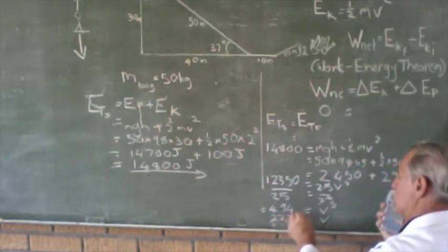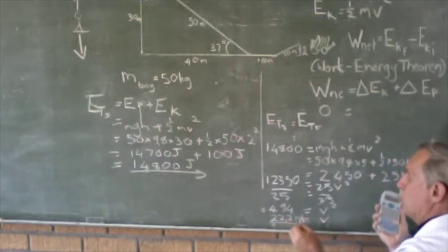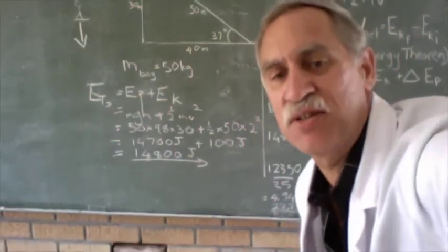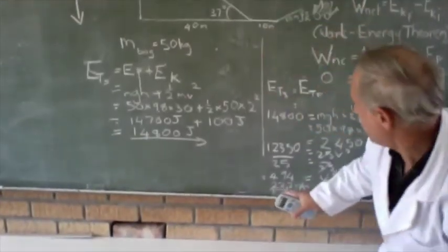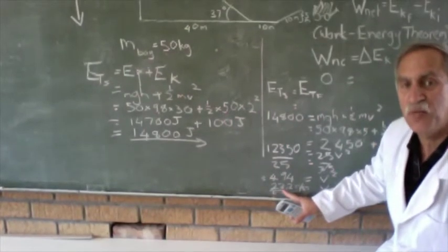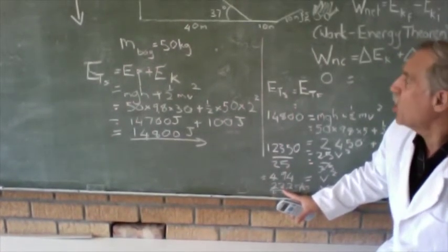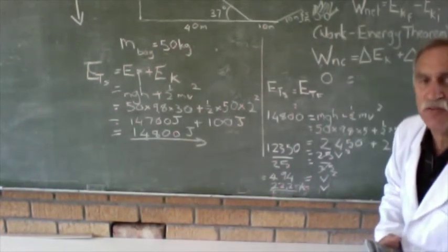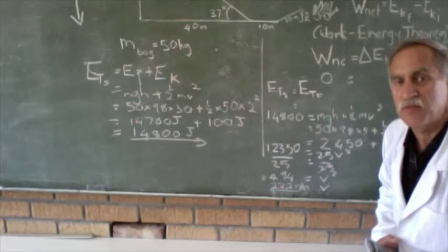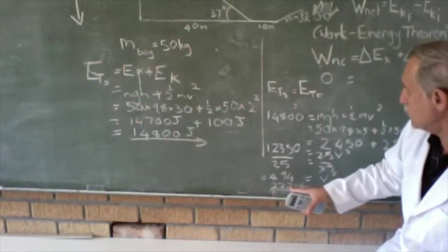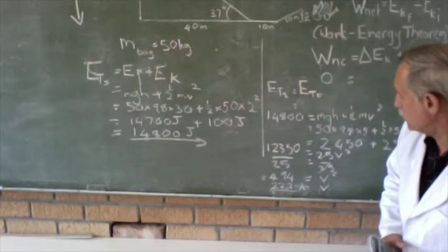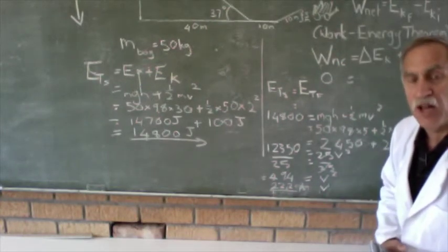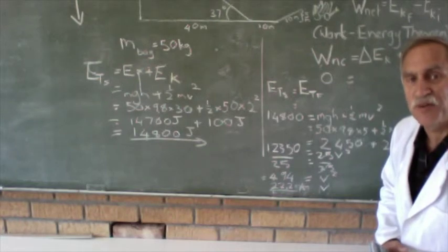22.2 and there we go we have reached the magical number of over 20 so he will manage to jump over his friends. We said at the beginning if he reaches 20 meters per second he will manage to jump over his friends and we've seen that he's now 22.2 meters per second and so his final velocity is large enough to enable him to jump over his friends.